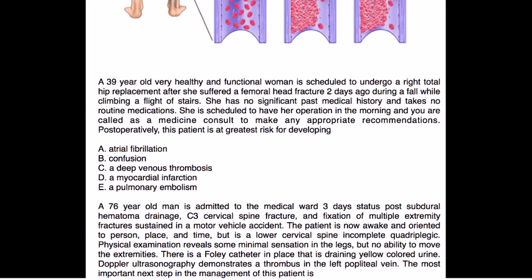Clinical vignette 2: A 76-year-old man is admitted three days post subdural hematoma drainage, C3 cervical spine fracture and fixation, and multiple extremity fractures from a motor vehicle accident. He is awake and oriented but is a lower cervical spine incomplete quadriplegic with minimal sensation in his legs and no ability to move his extremities. Doppler ultrasound demonstrates a thrombus in the left popliteal vein. What is the most important step in management?